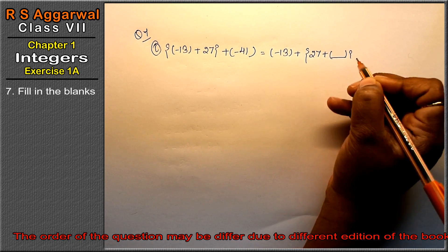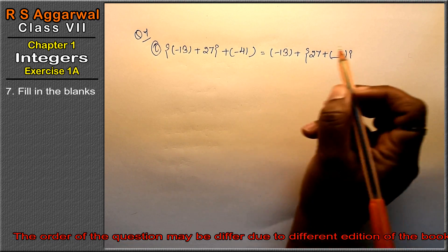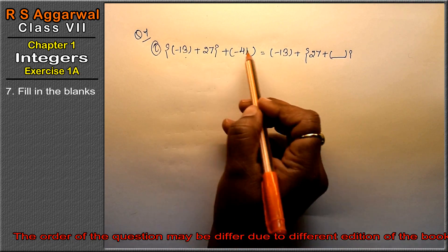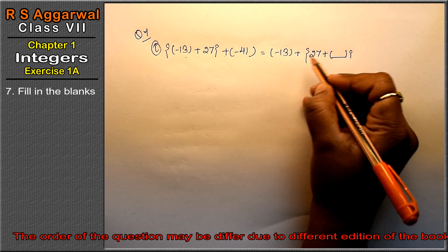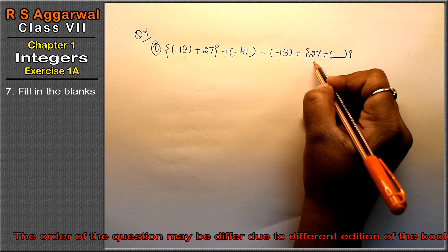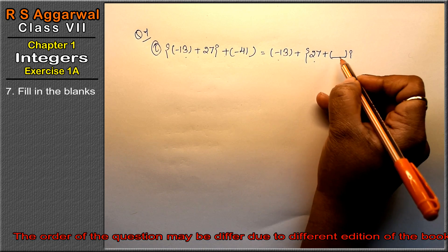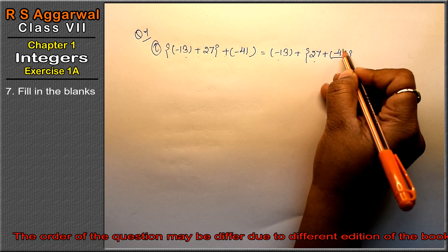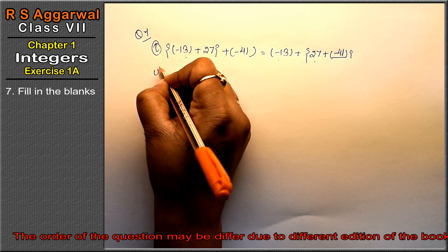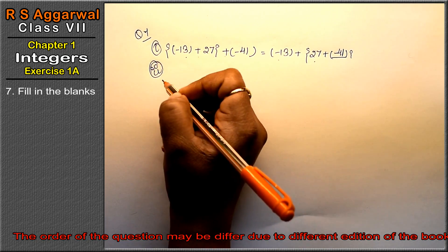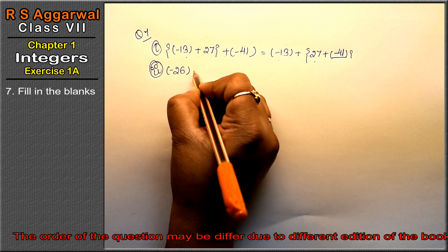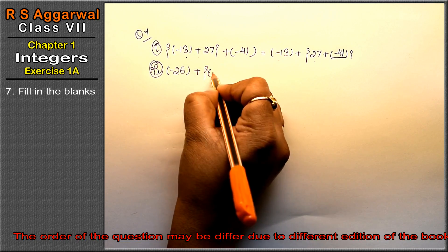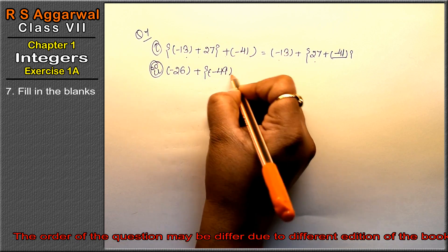What will come here, friends? If I open the bracket, this minus 13 will come because there's a sign between all of them. So what will come? Minus 13 is there, 27 is there, but minus 41 is not there. That means minus 41 is the answer.